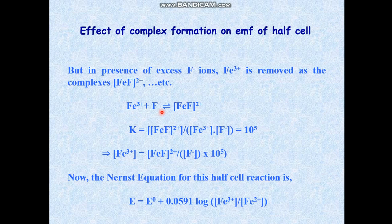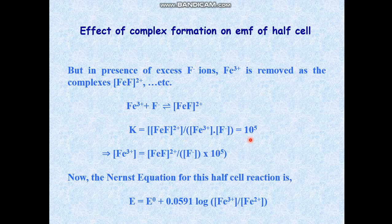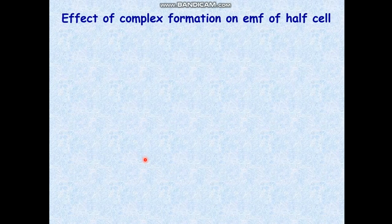The ferric ion with the help of fluoride ion forms this complex with a certain equilibrium constant value. Now in the Nernst equation, which is E⁰ + 0.059 log [Fe³⁺]/[Fe²⁺], in place of the Fe³⁺ concentration we would put this equilibrium value.